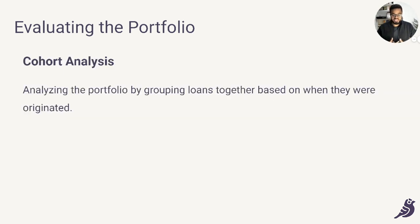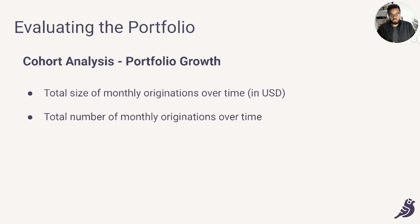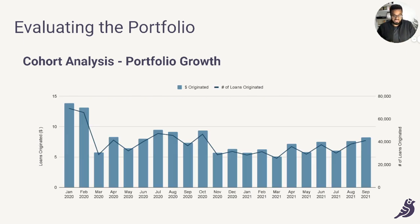Next, let's talk about analyzing the portfolio on a cohort basis. Here we're analyzing the portfolio by grouping loans together based on when they were originated. To get a sense for portfolio growth here, we're looking to understand one, how the size of monthly originations has changed over time, and two, how the number of monthly loans originated has changed as well. We typically request this data from the company and create charts.